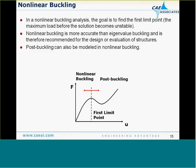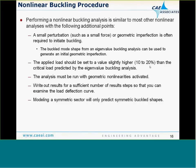Post-buckling can also sometimes be modeled depending on your structure — post-buckling is when the structure can take additional load even after initially buckling. The only real difference when running a nonlinear buckling analysis is that if you have a perfectly shaped structure, you typically need to introduce an imperfection. For example, if you have a perfectly symmetric cylinder, you have to make it imperfect, usually by applying a very small lateral load or small pressure.